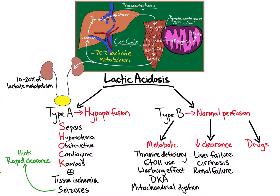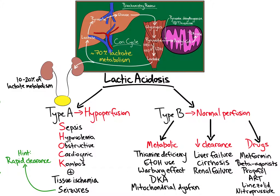Finally, multiple drugs can cause a type B lactic acidosis. Notable medications include metformin, parenteral beta-agonists like epinephrine, as well as inhaled beta-agonists to a lesser degree like albuterol, propofol, antiretroviral therapy — namely the nucleoside reverse transcriptase inhibitor class — linezolid, and nitroprusside via cyanide toxicity. Except for beta-agonists, which increase glycolysis, the remainder of these medications cause lactic acidosis by directly impairing mitochondrial function.